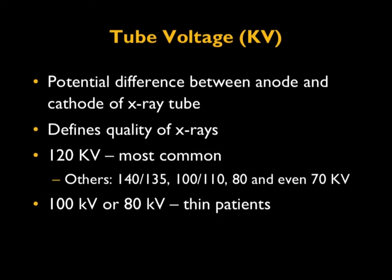The first factor is tube voltage, represented by kV. Tube voltage is the potential difference between the anode and cathode of an X-ray tube. Tube voltage defines the quality of X-rays. The most common tube voltage is 120 kV in CT. Other tube voltage settings are 140 or 135, 100 or 110, 80, and these days we also see 70 kV.